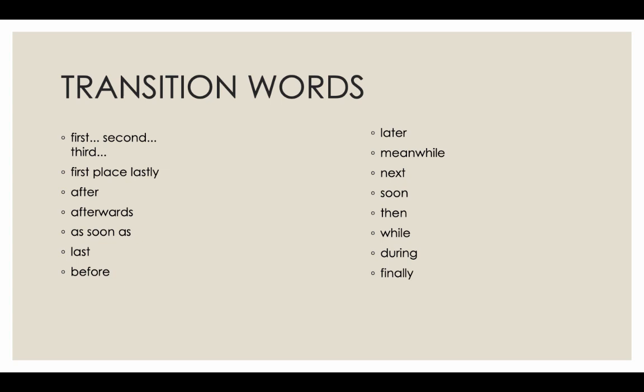Now, you're going to want to use transition words when you start writing. But these are different transition words than the ones we use for descriptive writing. These are like: first, second, third, first place, lastly, after, afterwards, as soon as, last, before, later, meanwhile, next, soon, then, while, during, finally. These are all kinds of words that give the reader a clue that you're moving forward in time, that things are ordered in a sequence.